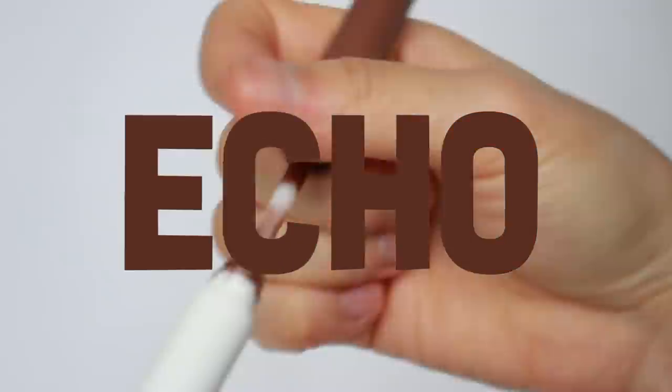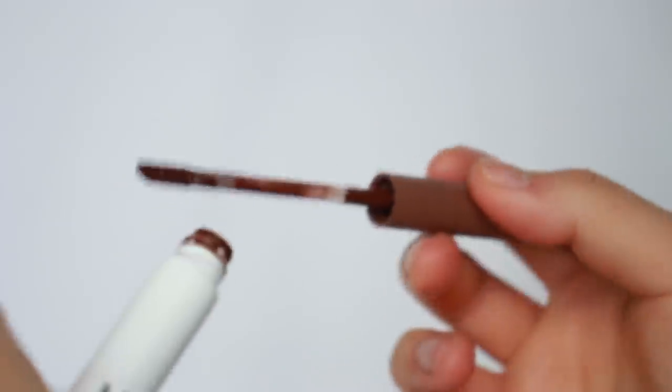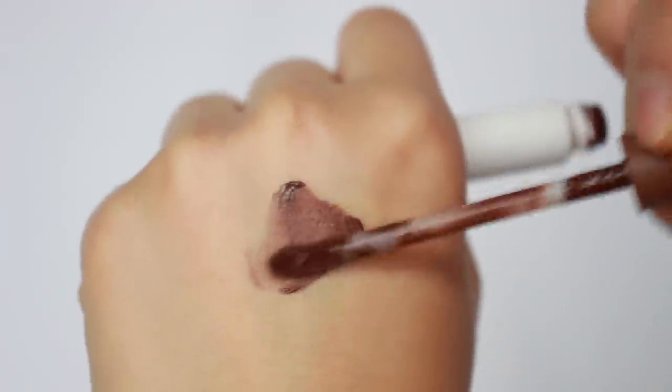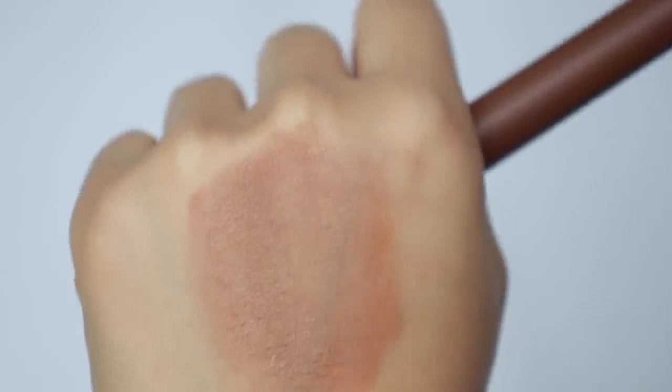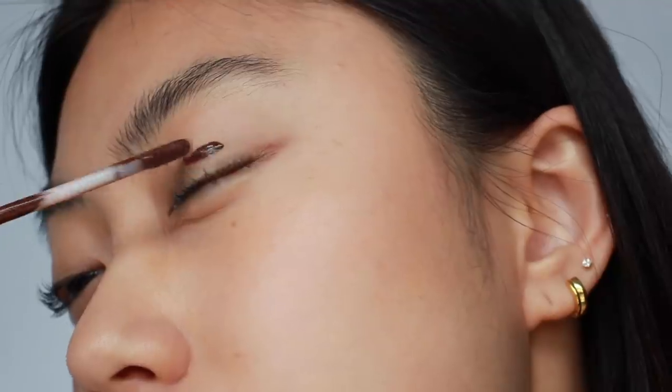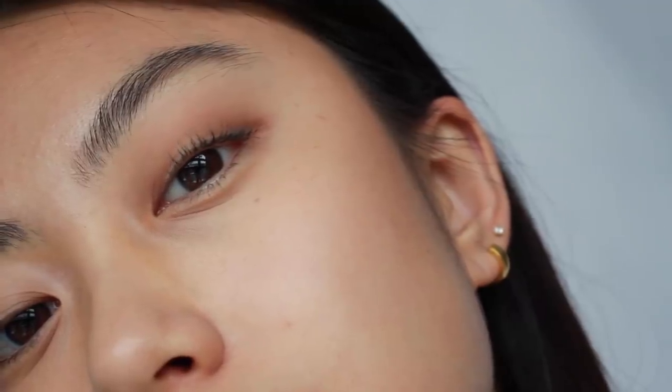Next up, the shade Echo is cocoa brown. The shade Echo is the darkest shade among these seven shades, so the shade itself looks quite scary and very intense, but you could see that it comes out very sheer and wash of color. One coat would be enough for me, but if you put more layers, you could get the brown smoky eye look.